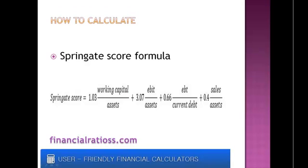In order to calculate the Springgate score, you have to multiply 1.03 by working capital divided by assets, then add 3.07 multiplied by EBIT divided by assets, then add 0.66 multiplied by EBT divided by current debt, and lastly add 0.4 multiplied by sales divided by assets.